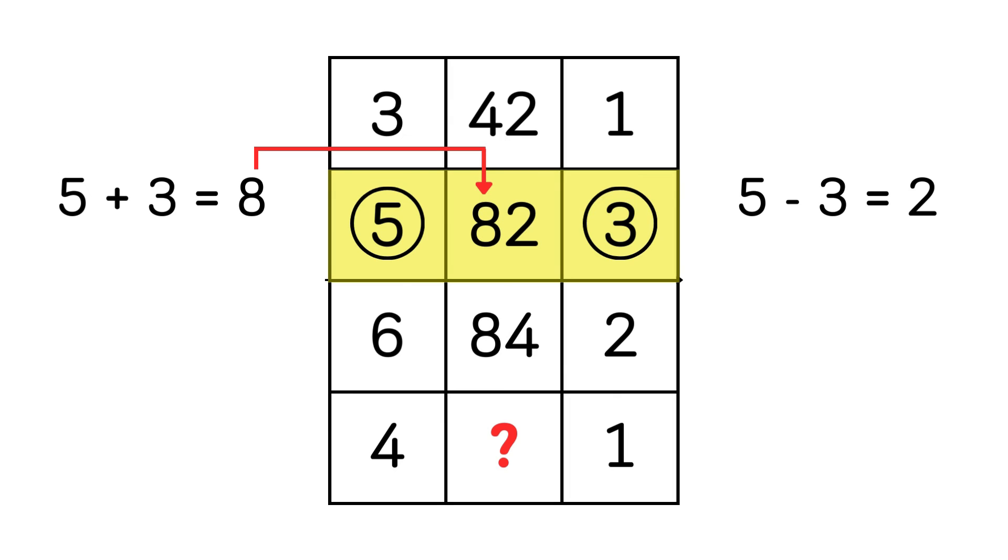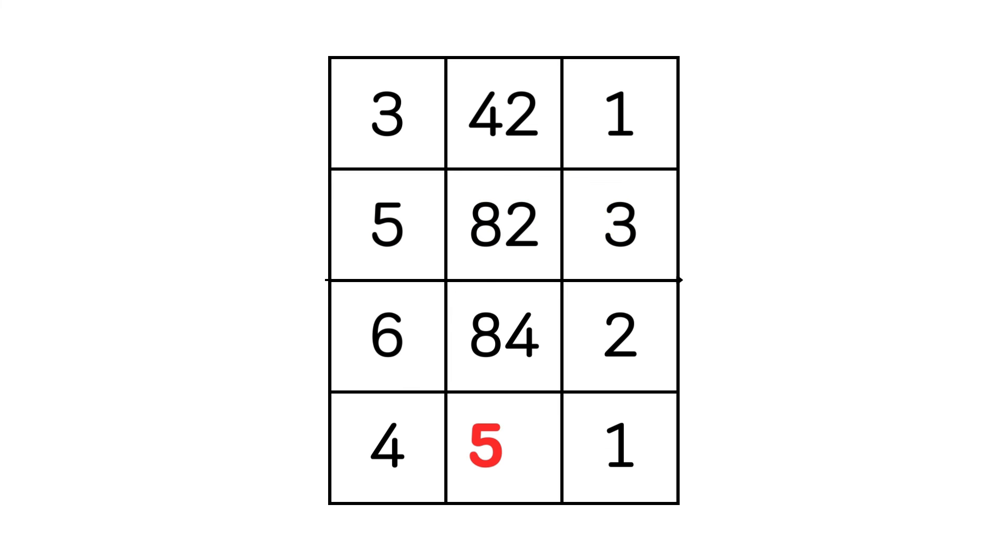Now in the last row, four plus one equals to five, and four minus one equals to three. So the answer is 53.